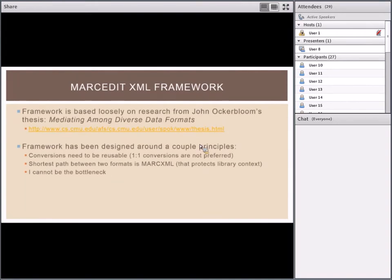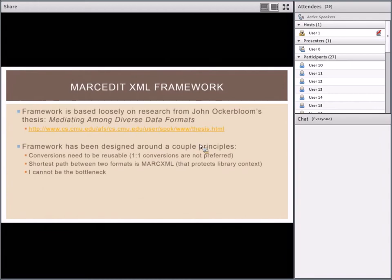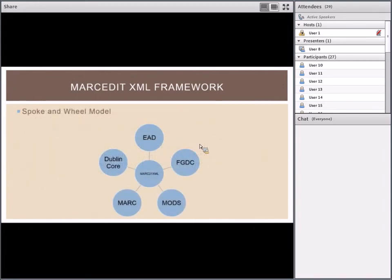When I think of the MARCEdit XML framework, I think of it like a bicycle tire — a spoke-and-wheel model. Every transformation exists as a spoke on the wheel; MARC XML sits in the middle. Because every transformation understands how to go to MARC XML and how MARC XML goes back to it, as I add new spokes I can automatically transfer any of those other formats. If I want to transfer from FGDC to Dublin Core, both are just spokes on the wheel.